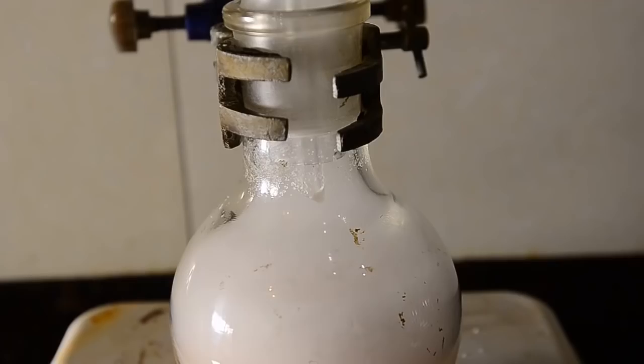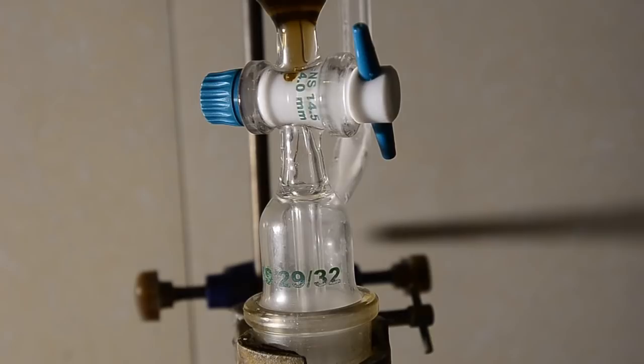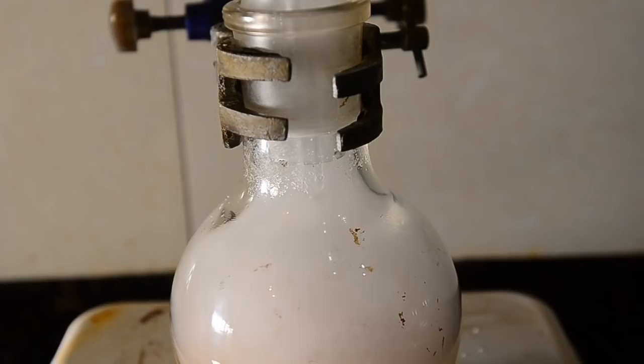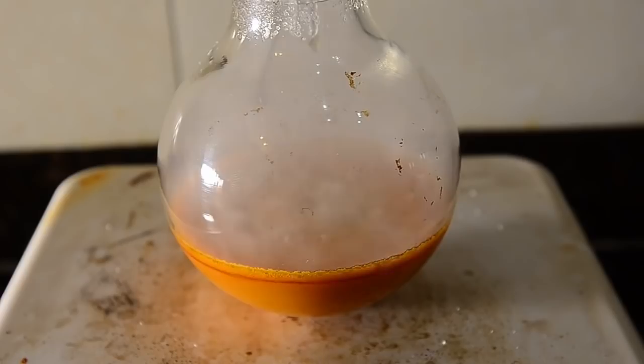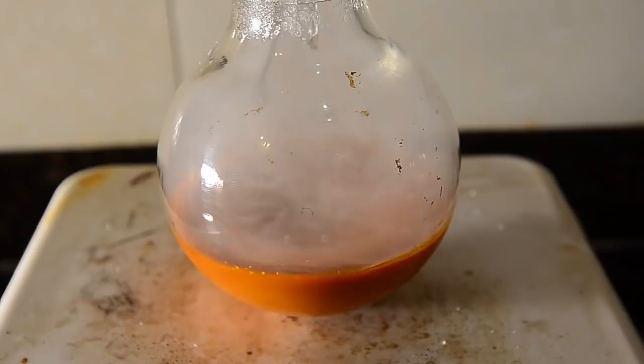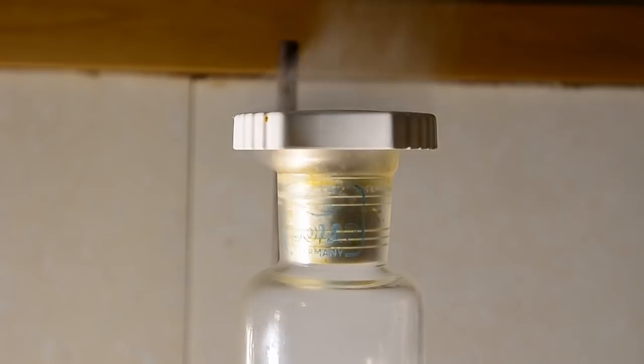Now begin the very slow addition of this to the vigorously stirred benzene mixture in the flask. A lot of hydrogen bromide gas is going to be produced and the temperature will increase. Don't allow the temperature to rise above about 50 degrees C. You will see an orange color and then the mixture will become dark.